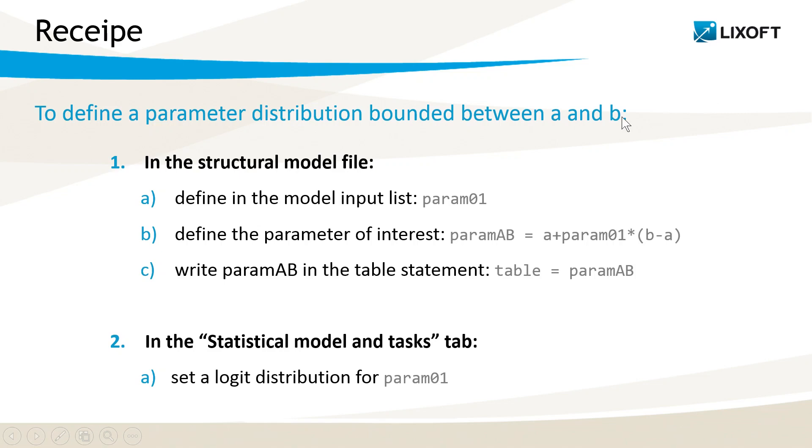So the general recipe to define a parameter distribution bounded between two values A and B is the following. In the structural model file, in the model input list, I define the parameter_0_1. Then I define in the core of the code the parameter of interest via this transformation. And then I need to write this parameter in the table statement, such that it is outputted by Monolix. And in the statistical model and task tab, I need to set a logit distribution for param_0_1. So that's it for the first example.